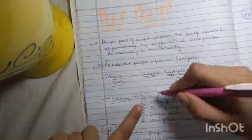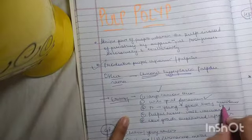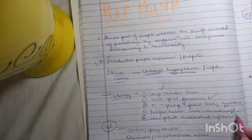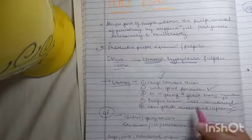In etiology, you need to have a large caries lesion. Then, you need to have a wide apical foramen. Patients should be young with good body resistance. Then, the pulpal tissue should be well vascularized. Also, low-grade sustained inflammation, then it will be chronic.